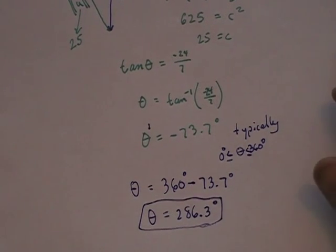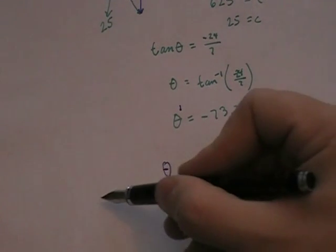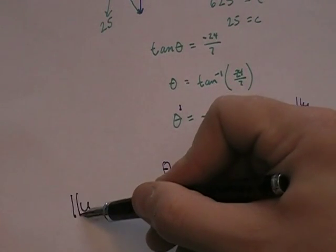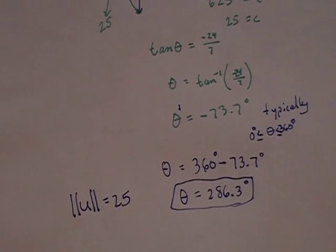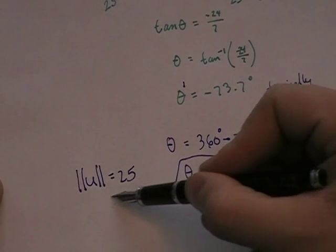And so theta is actually going to be 286.3 degrees. So magnitude's 25, direction angle's 286.3.